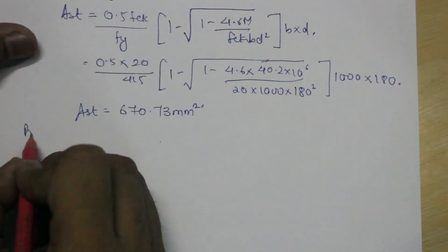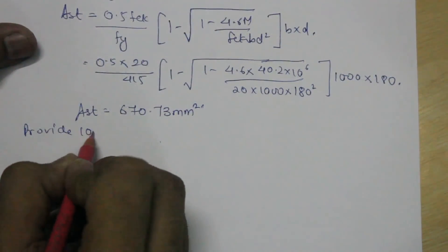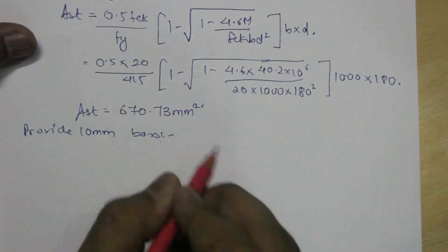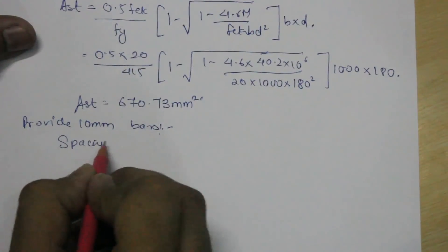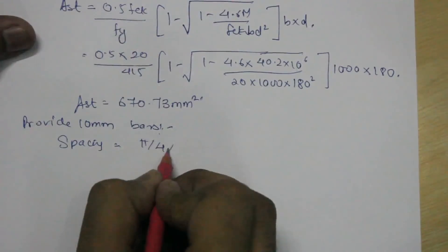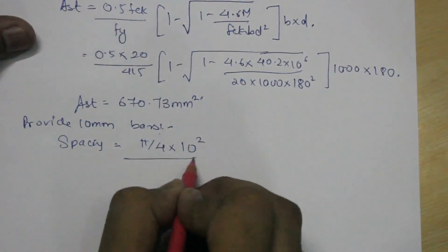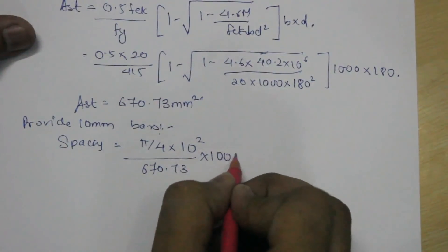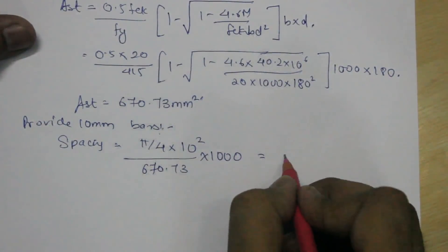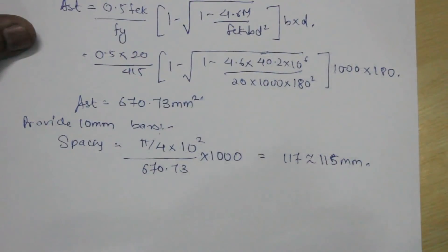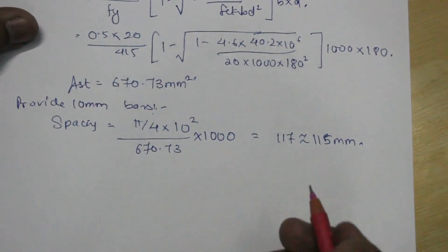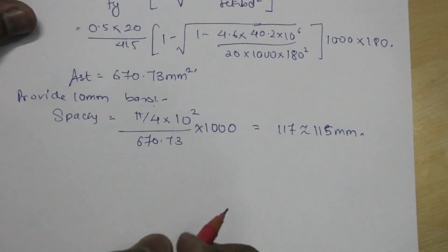Once you get this, you can provide the bars. So I'm providing 10 mm bars, so the spacing would be area of 1 bar is pi by 4 multiplied by 10 square upon the AST required, which is 670.73 multiplied by 1 meter, which is in mm. So you get it as 117, let's assume 115 mm.